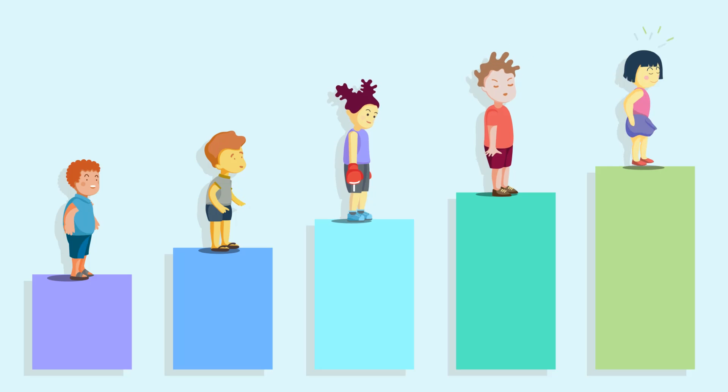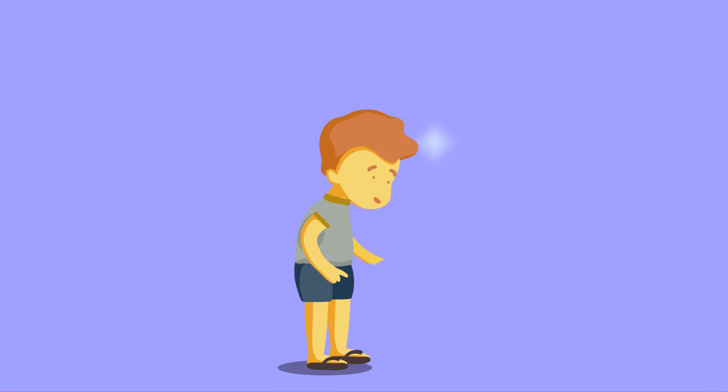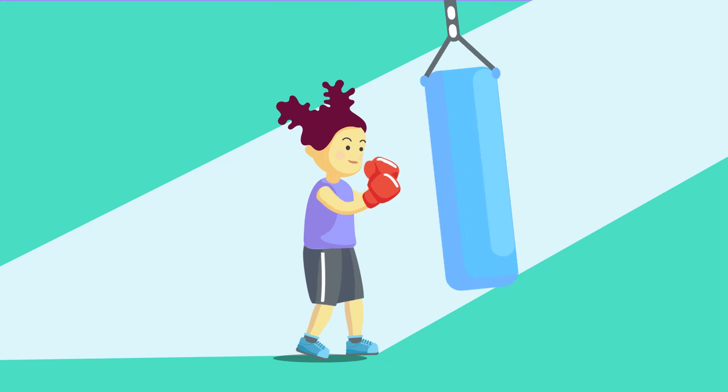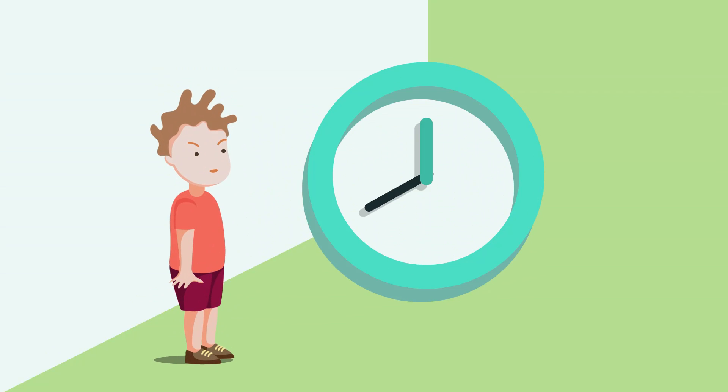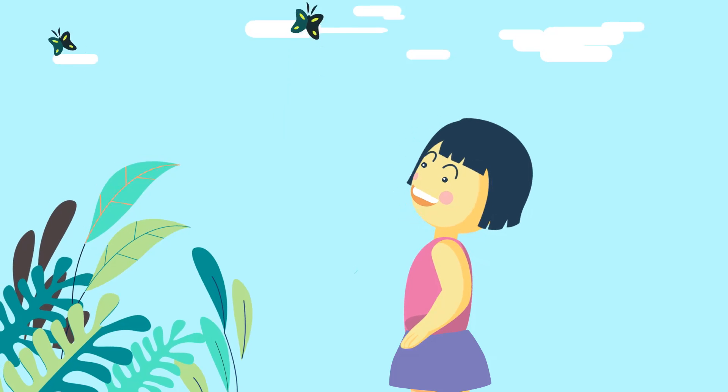They're studying algebra. Of course, the tables here are a metaphor for learning. Luke needs to start the chapter from the beginning. Oliver needs to relearn some key concepts. Mia needs more practice. Danish obviously needs more time. And, well, Tara is doing just fine.